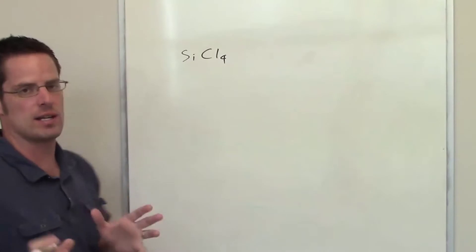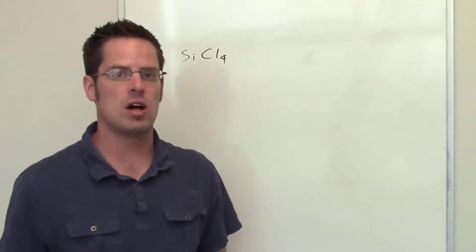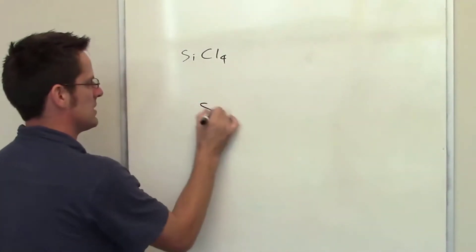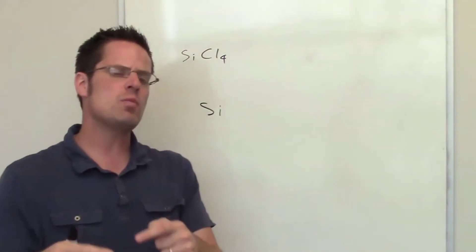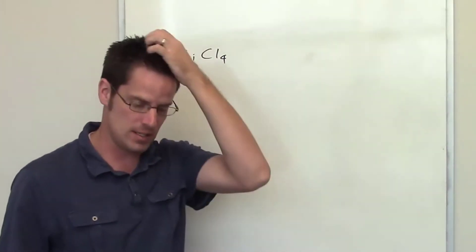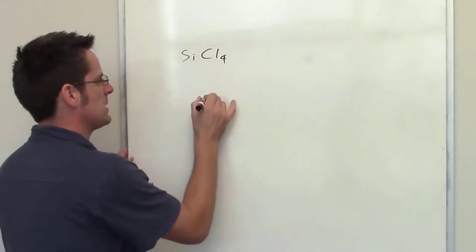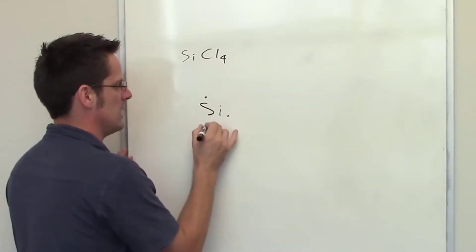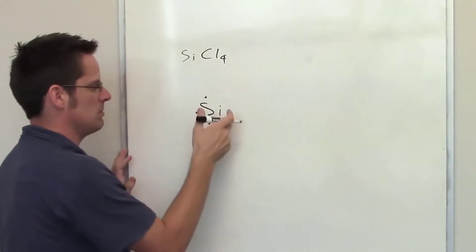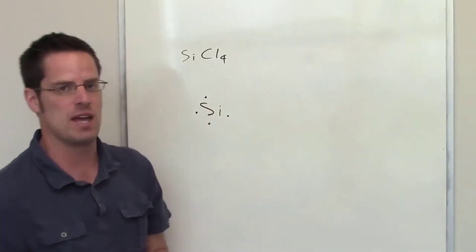If you look at the periodic table, you'll notice that silicon is in column 4a. That means that silicon has four valence electrons. The way that we depict that using a Lewis symbol is by drawing silicon's atomic symbol, Si, and then placing one of each of those valence electrons on the top, bottom, left, and right sides of that symbol.